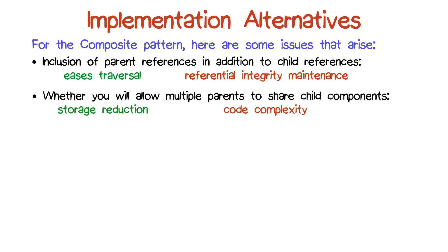Another issue is whether we would allow multiple parents to refer to the same children. Imagine that you have separate hierarchies in which the leaf elements are shared. This can be powerful if you wish to do it, because it reduces the overall number of objects that you have, but it might also increase your code complexity.